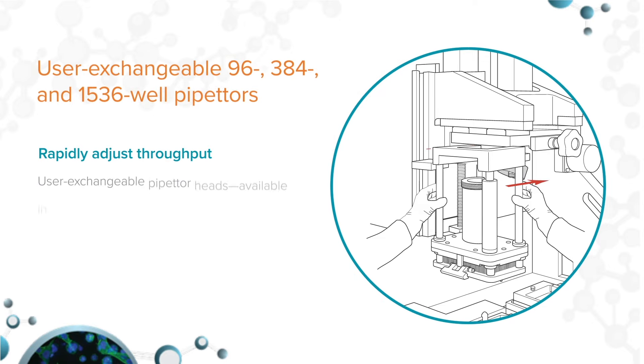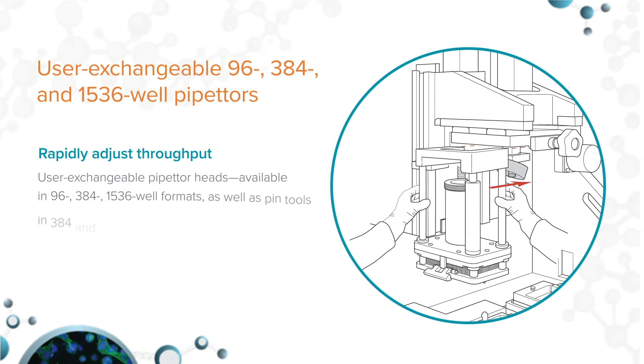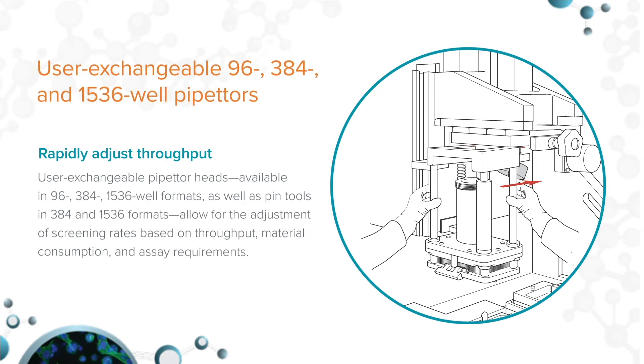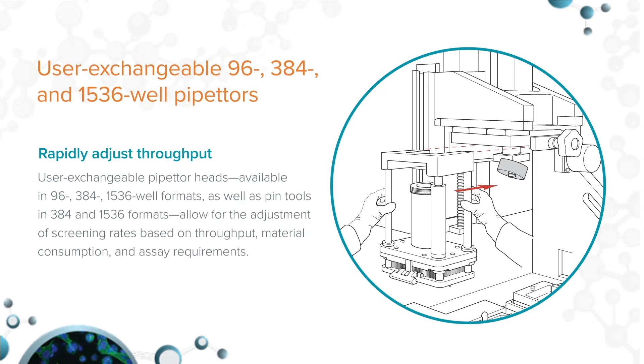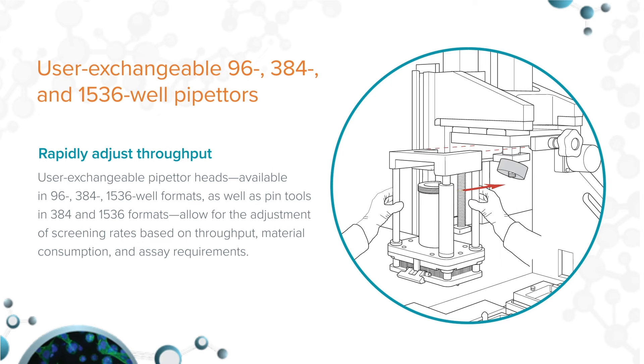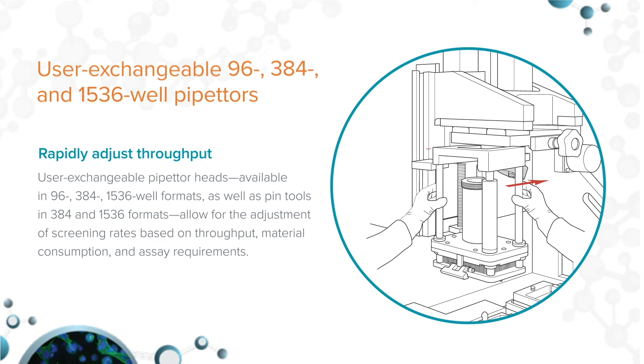User interchangeable pipette modules can accommodate manual and automated assays in 96, 384, or 1536-well throughputs.